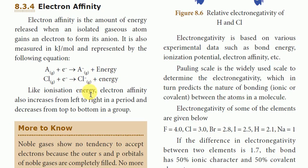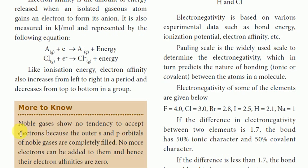Like ionization energy, electron affinity also increases from left to right across the period and decreases from top to bottom in the group. The noble gases show no tendency to accept electrons because the outer s and p orbitals of noble gases are completely filled.